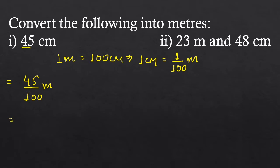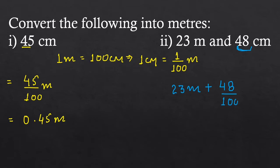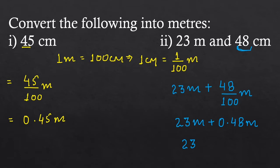45 upon 100 can be written as 0.45 meters. The next part is 23 meters and 48 centimeters. Here, 23 is already in meters, so we convert 48 centimeters into meters: 48 upon 100 equals 0.48 meters. So 23 meters plus 0.48 meters equals 23.48 meters, adding the whole parts 23 and 0 to get 23.